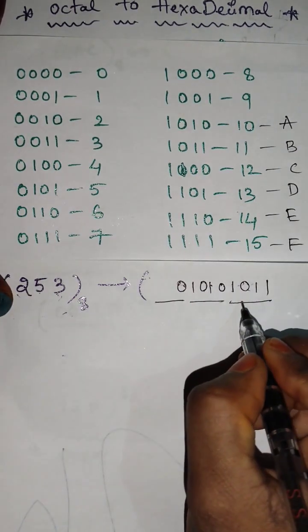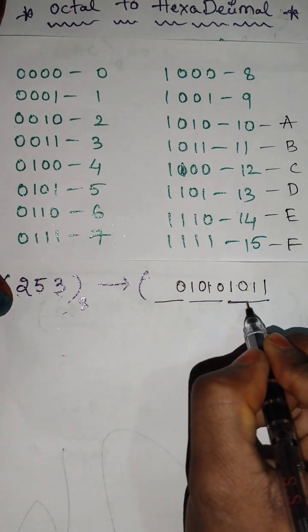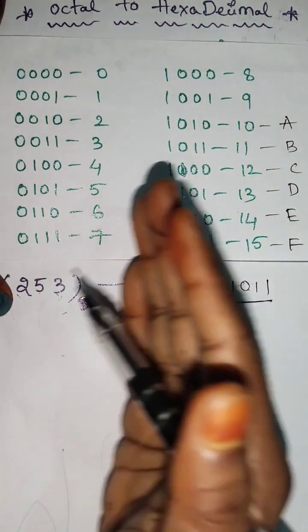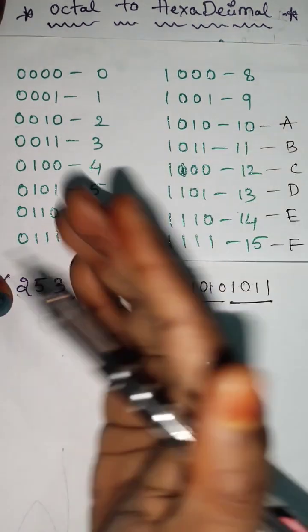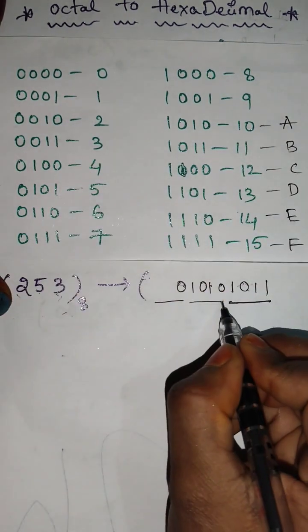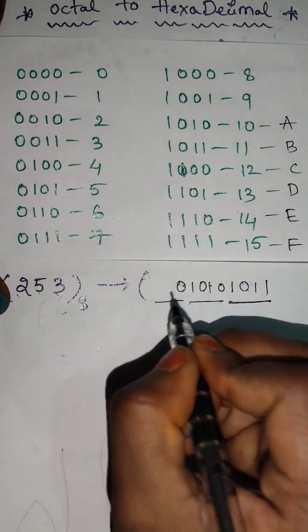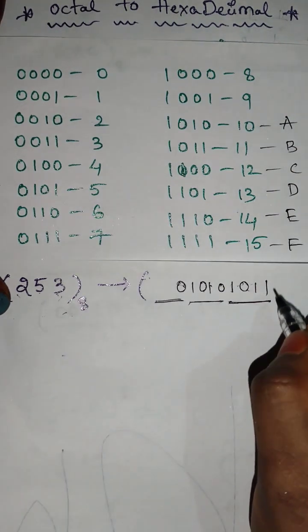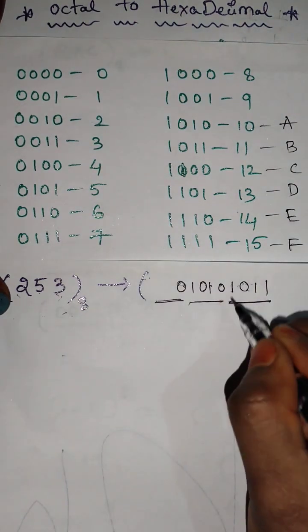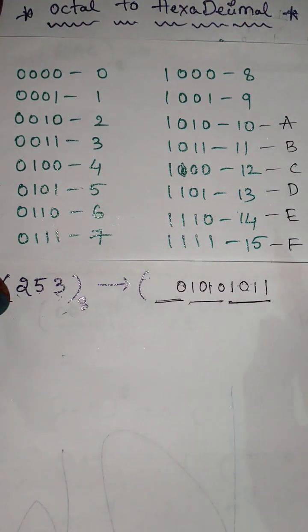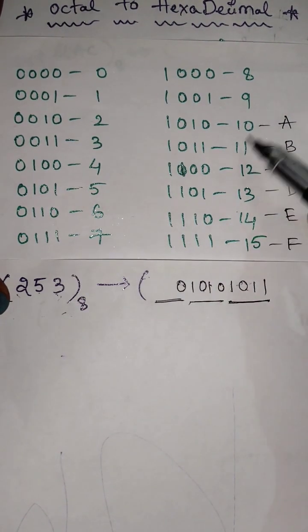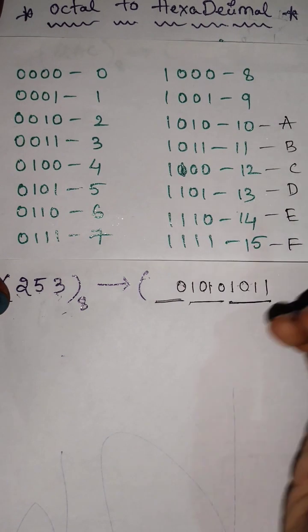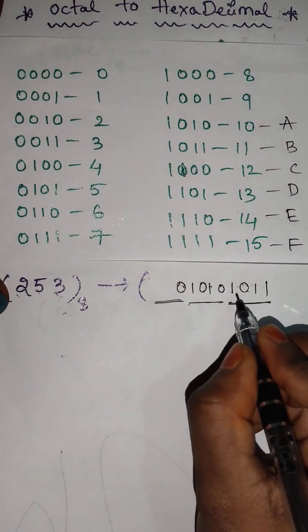Then we need to mark 4 digits from the right to left, grouping into sets of 4 digits. Then write down the equivalent hexadecimal digit.